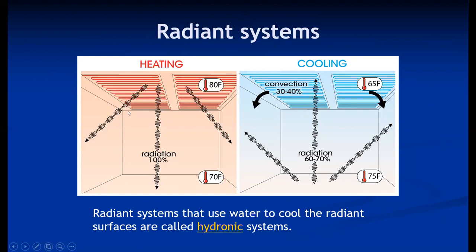The radiant system that uses water to cool the radiant surfaces — where pipes are mounted on the ceiling and water is circulated through them — is called a hydronic system. The major difference is: in radiant heating, heat is transferred only by radiation; in radiant cooling, heat is transferred by both convection and radiation. The main disadvantage of this system is it can only absorb sensible heat.